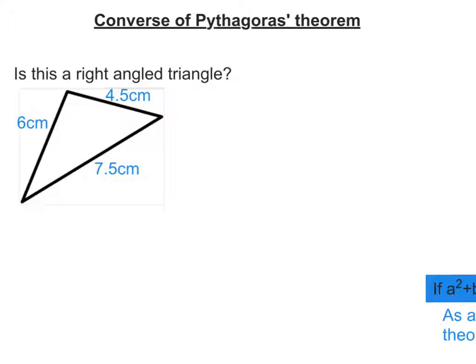In this video, we're going to look at the converse of Pythagoras' theorem. Now, Pythagoras' theorem said if you have a right-angled triangle, then A squared plus B squared equals C squared.